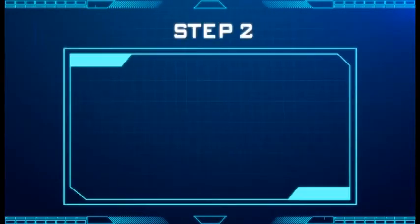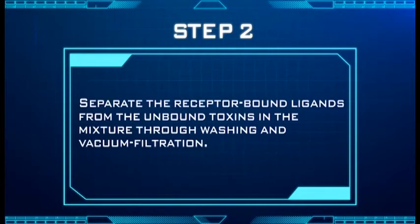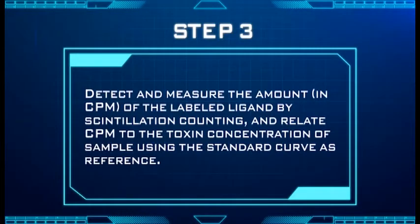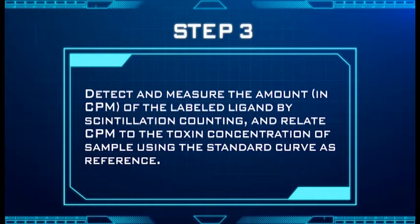Step 2: Separate the receptor-bound ligands from the unbound toxins in the mixture through washing and vacuum filtration. Step 3: Detect and measure the amount, in units of counts per minute (CPM), of the labeled ligand by scintillation counting, and relate the total counts to the toxin concentration of the sample using the standard curve as reference.